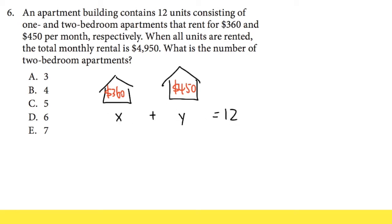Then the next thing we do is we are going to take each price times the quantity that we have for each one. So we'll put down 360 times x plus 450 times y. We multiply the price and the number of apartments that we have. This way, when we add them all together, it will give us the total rental that we can get, which is 4,950.